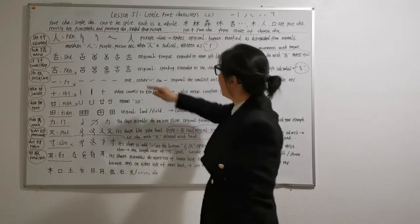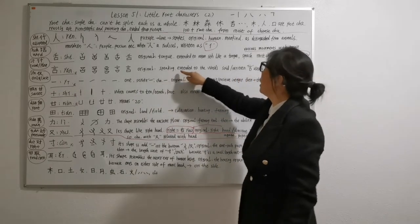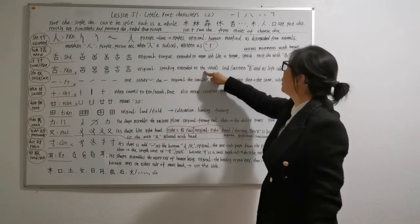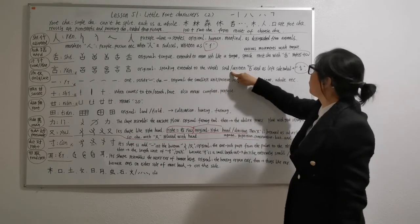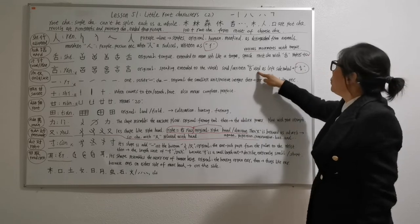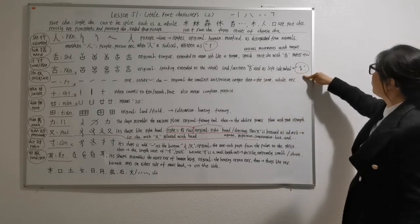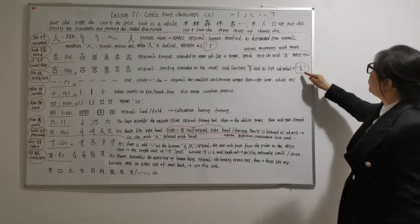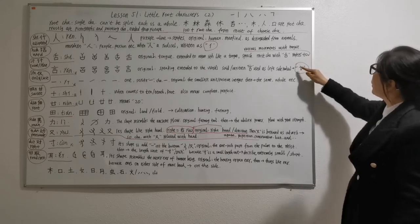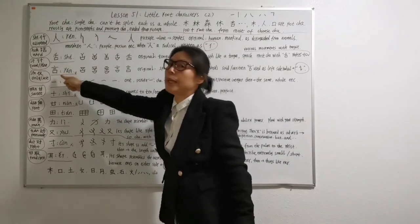Finally, changing to this modern character, yan, yi an yan. Its origin meaning is speaking, later extended to the words you said or written. When yan used as left side radical, it's written like this, yan. When you see this radical, you know it equals yan.